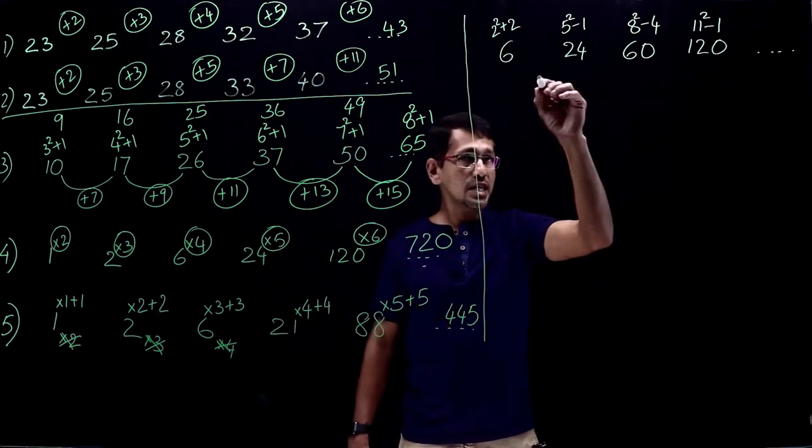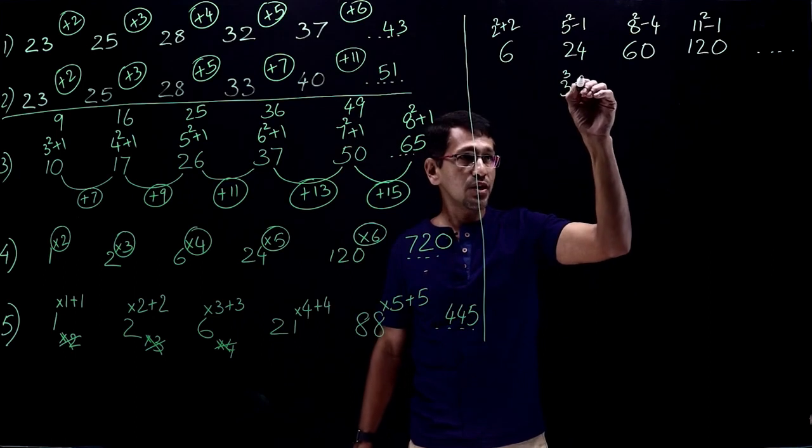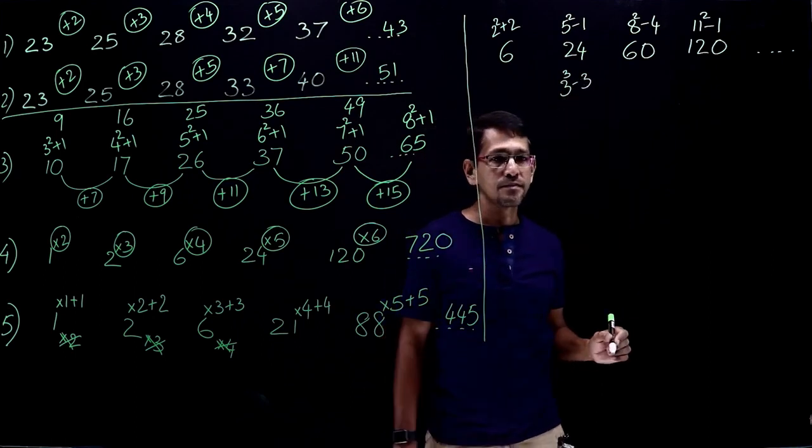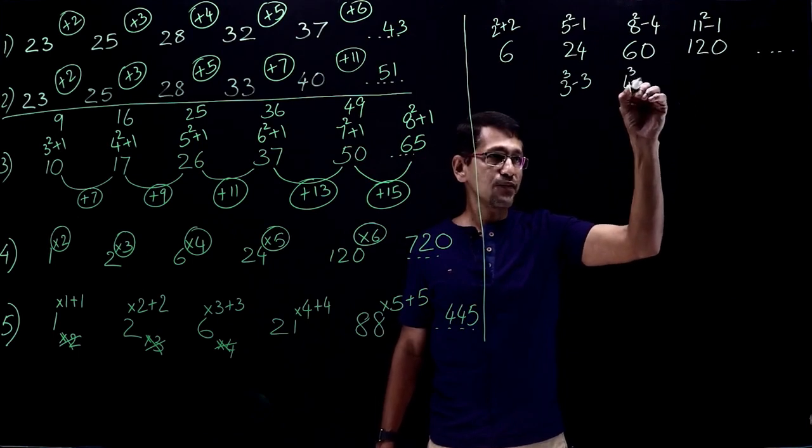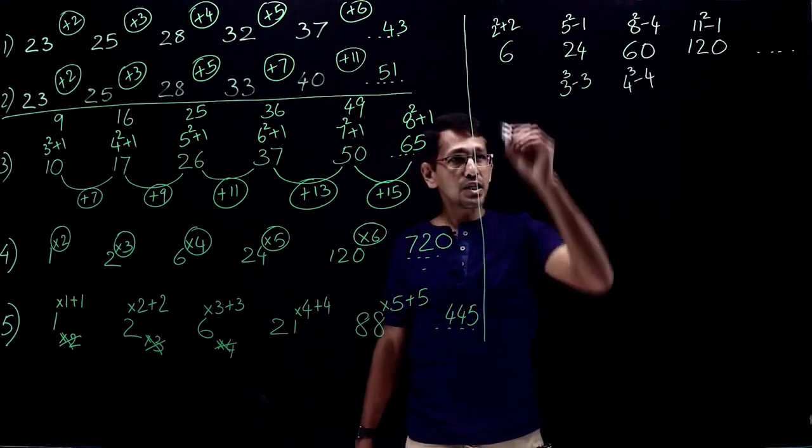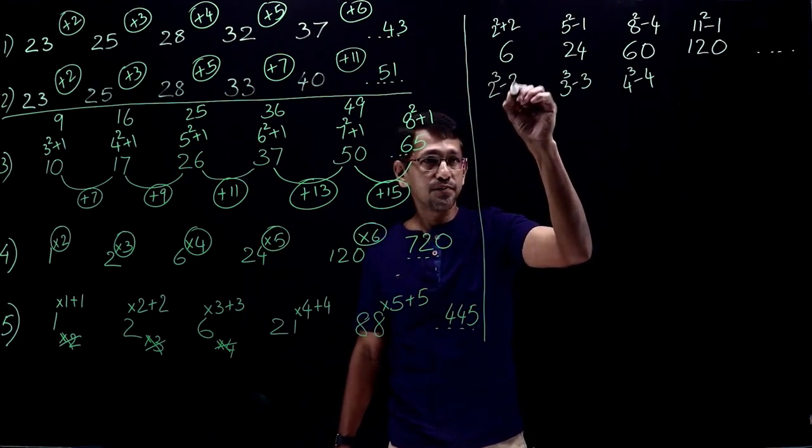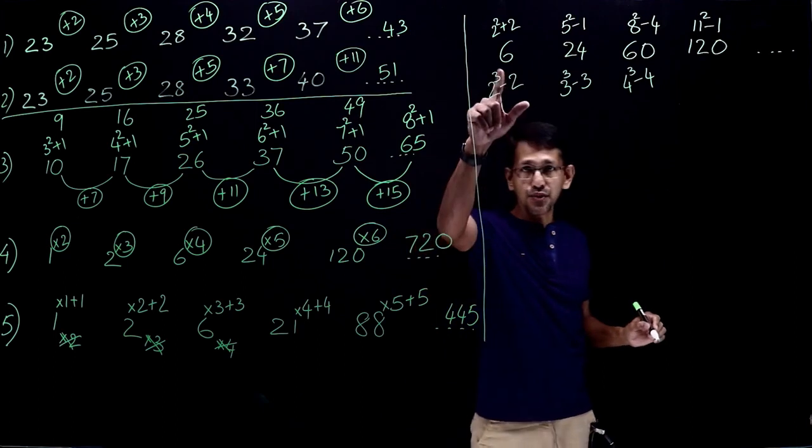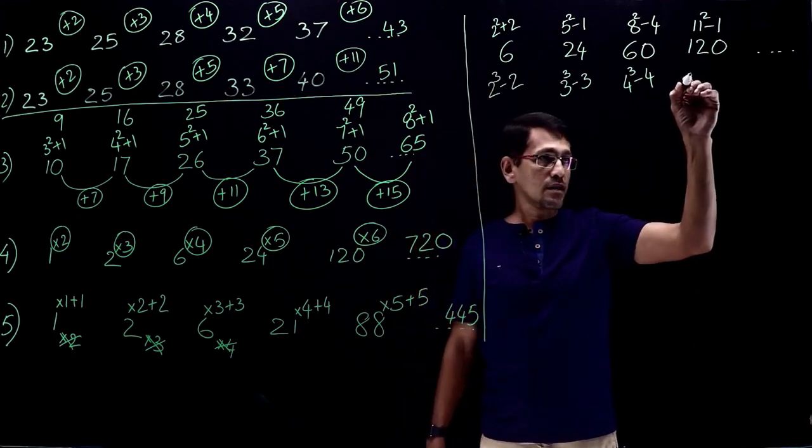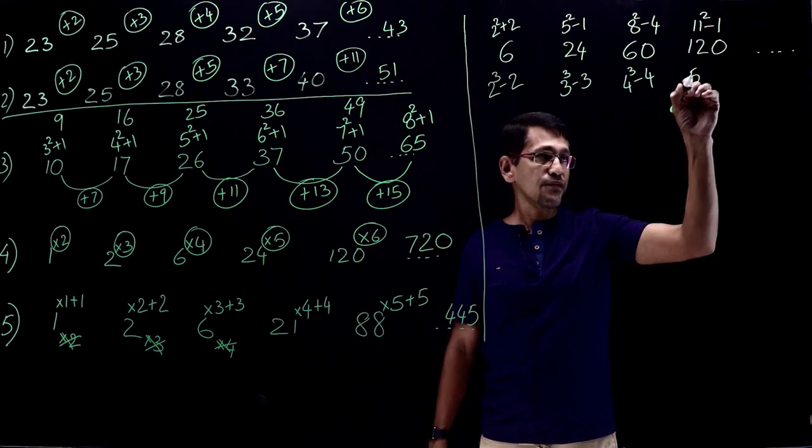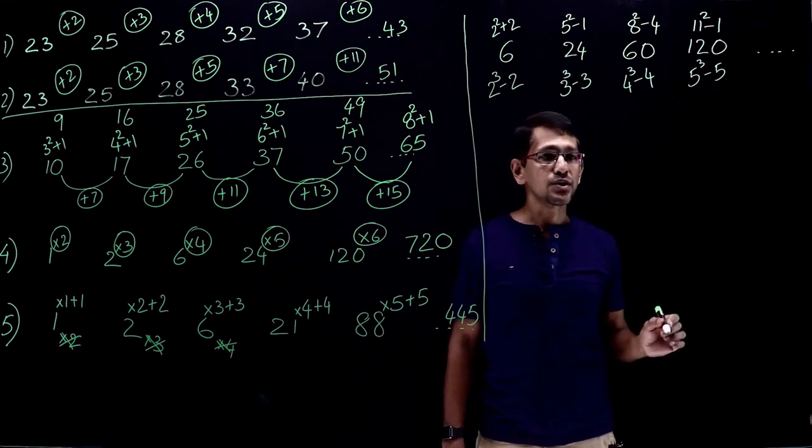Because, you know what, when I look at these numbers, what I see is 3 cube. 3 cube is 27, so this is 24, 3 cube minus 3. And this one is 4 cube, 4 cube is 64, 4 cube minus 4 is 60. And this one 2 cube minus 2, 2 cube is 8, minus 2 is 6. Alright, so what is it? Next one must be, naturally, 5 cube minus 5. So 5 cube is 125 minus 5, 120.